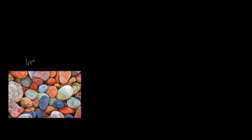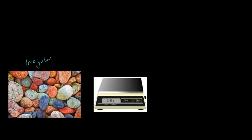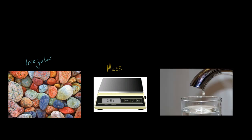Now let's look at irregular objects — objects without a particularly defined shape. Getting the mass is straightforward: just place it on a balance. But the volume is more problematic, because you can't measure the sides with a ruler and multiply them together, so you have to use a different technique.